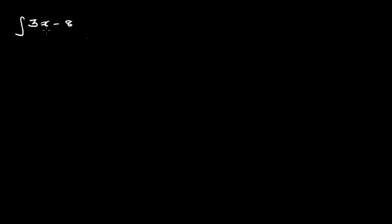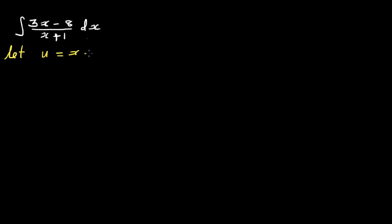Let's start with the problem: integration of (3x minus 8) divided by (x plus 1) dx. When doing integration by substitution, our aim is to write whatever we are substituting in terms of u. The rule of thumb is generally whatever is in the denominator, you let that be u.